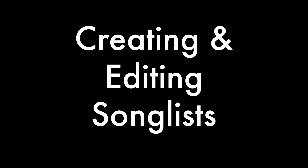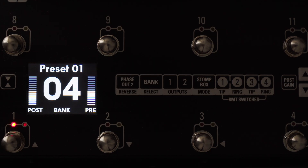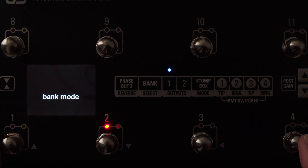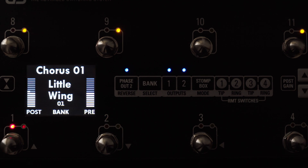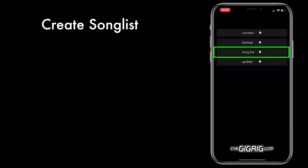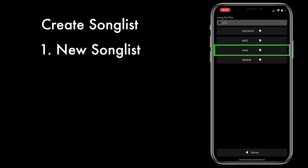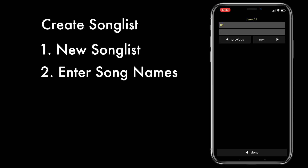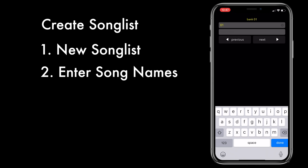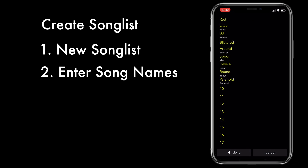Now let's have a look at creating and editing song lists. There are two modes in G3 — we go to global setup and the first thing you see is song and bank mode. In song mode, it replaces the bank numbers with song titles, so we can assign a song title to each bank. Let's create a song list. Open up the app and press Song List, then press New. On the left-hand side of the app, you'll see all the numbers, which correlate to the banks within G3. Press on those and start editing them. The song titles let you have two lines — the top line and the line underneath it. We're just going to create some songs, and then we have a song list.